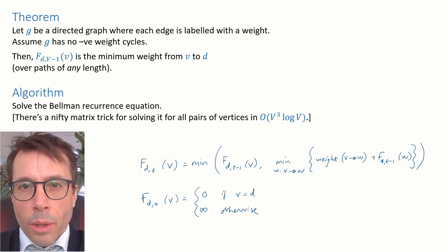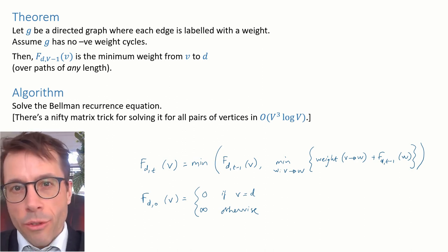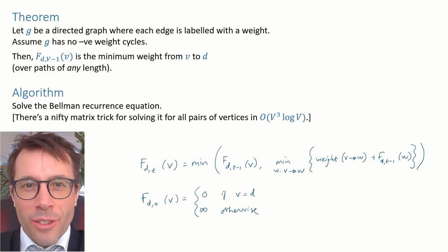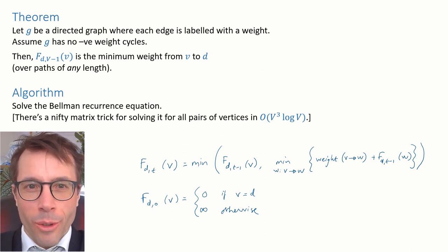Incidentally, there's a nifty way to implement this using matrices, which finds the minimum weights between all pairs of vertices in the graph, which is just three lines of code long. It's amazing how concisely you can write code when you have powerful maths and algebra behind you. Think how many lines of code it takes to write out Dijkstra's algorithm.